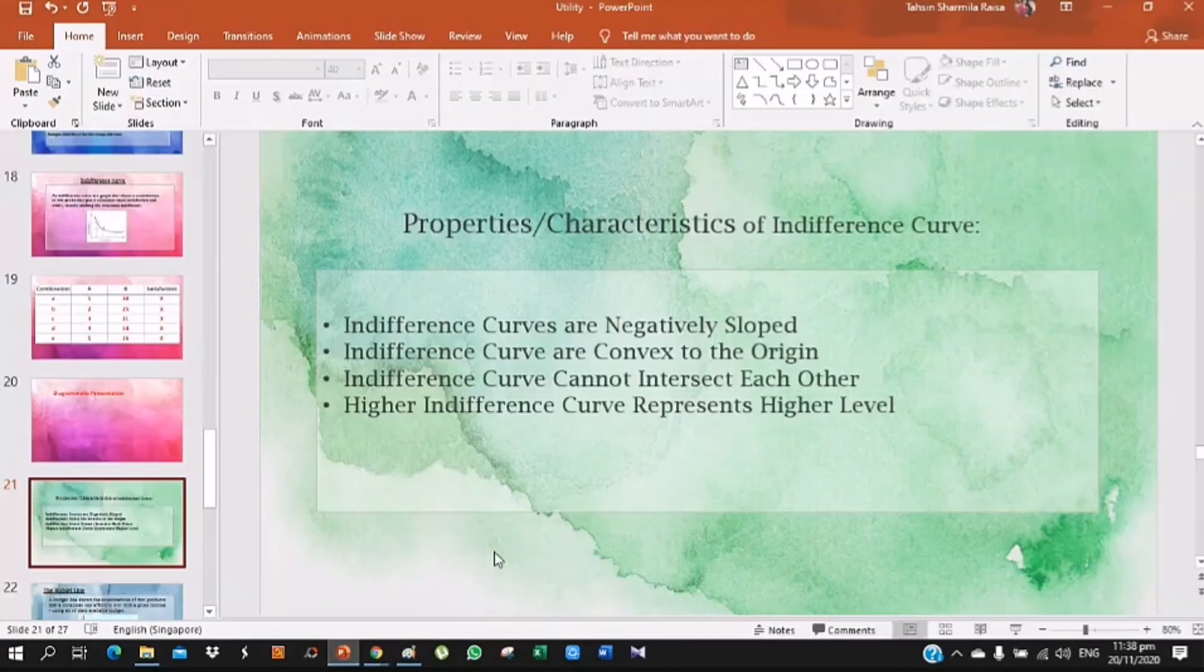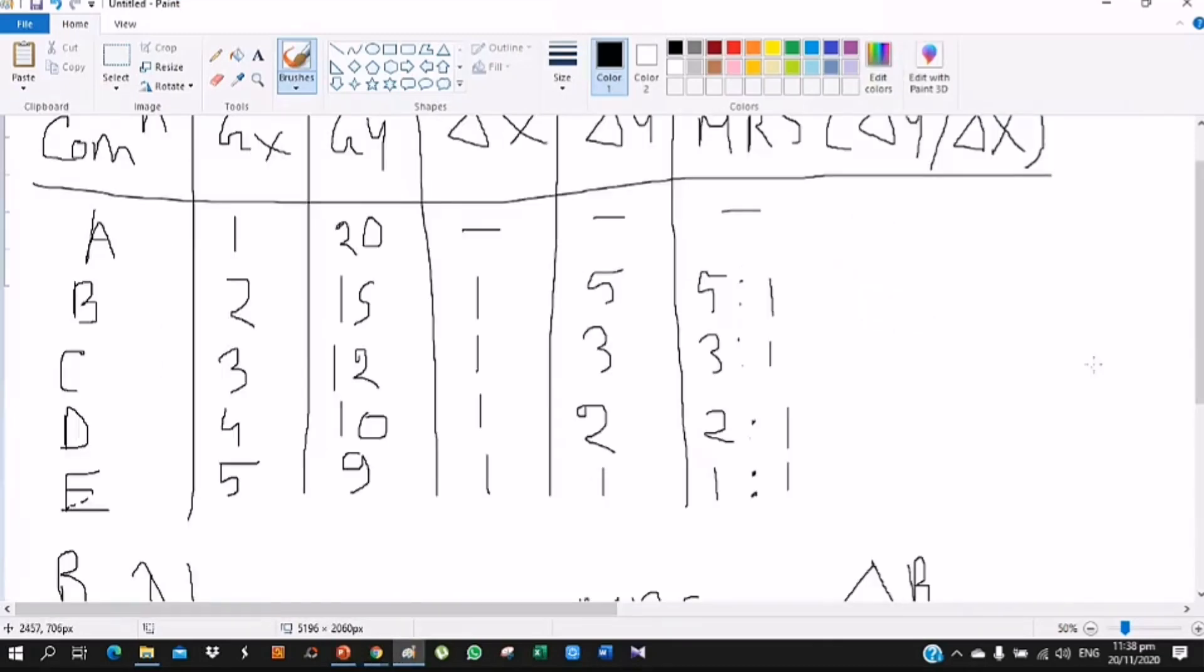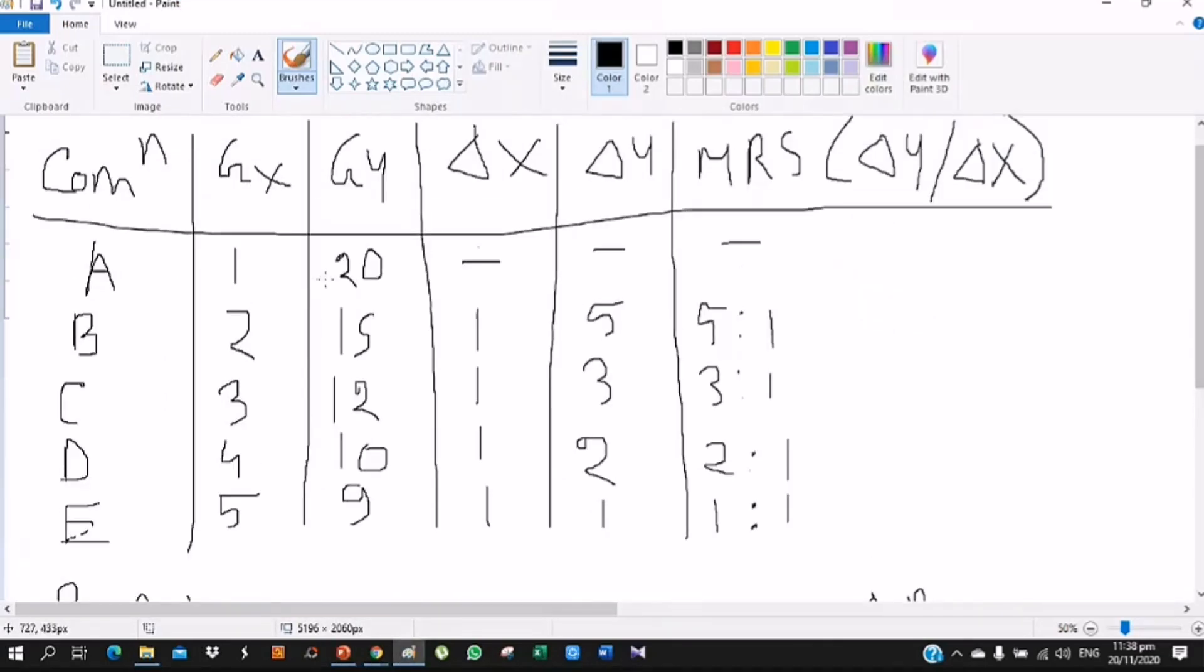Second, indifference curves are convex to the origin because of the fall in MRS. Now I'll give an example showing different types of combinations A, B, C, D, E. These are combinations and the two goods are X and Y. For X good there are 1, 2, 3, 4, 5 units.